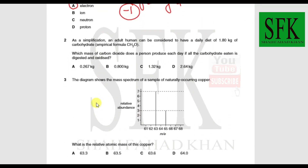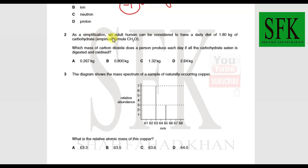MCQ 2: An adult human has a daily diet of 1.8 kg of carbohydrate with a given empirical formula. We need to find the mass of carbon dioxide produced each day if all the carbohydrate is digested and oxidized. The carbohydrate is undergoing complete combustion, producing carbon dioxide as a product.